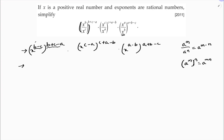First I will take b and multiply for all three terms. So x power b squared plus bc minus ab, then I will take minus c and multiply for all: minus bc minus c squared, plus ac.